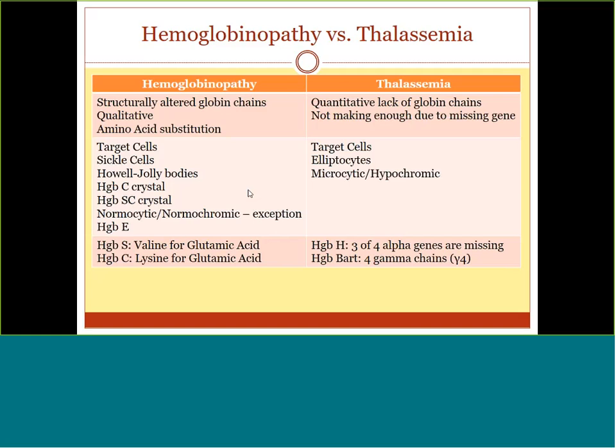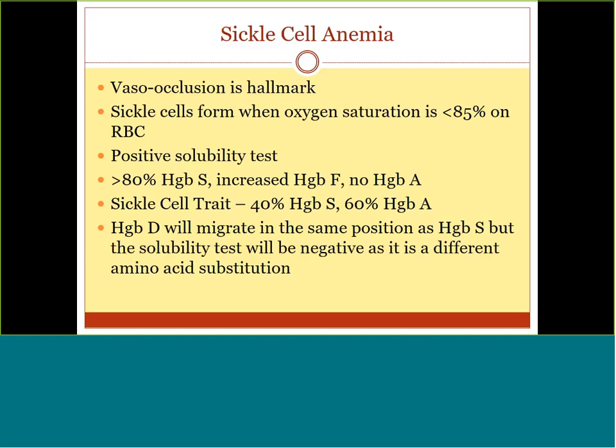Go back to that PowerPoint and look through those items. You can also look through the study guide — those questions are all applicable. Now a little more on sickle cell anemia, since it was such a big disease. Remember, the clinical hallmark sign is vaso-occlusion — when cells begin to sickle, they clog up blood vessels, which is very painful for patients.